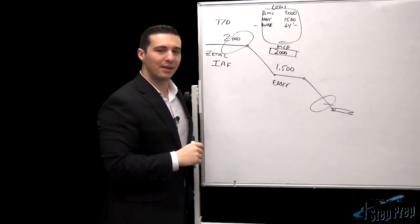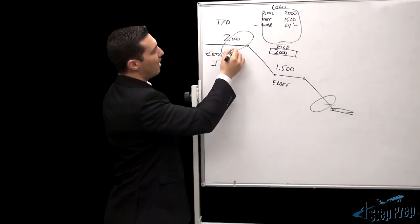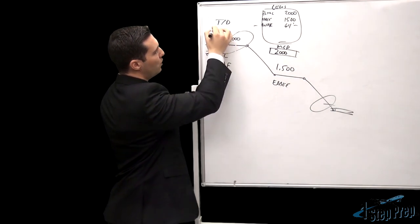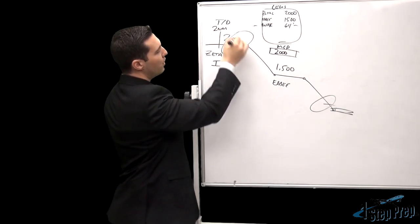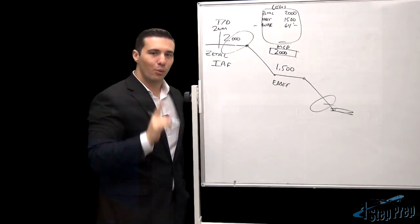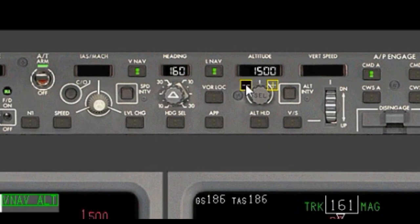LNAV is engaged as we navigate laterally straight to this point and approximately two nautical miles prior to your initial approach fix, we are now going to turn to the MCP and we're going to roll down the MDA, we're going to set MDA altitude.